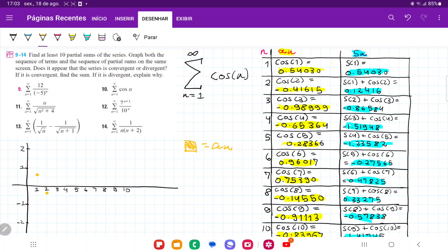Cosine of 3 is negative 0.98, so almost negative 1. Cosine of 4 is negative 0.65, so maybe about here. Cosine of 5 is 0.28, so that's going to be about so. Cosine of 6 is 0.96, here.